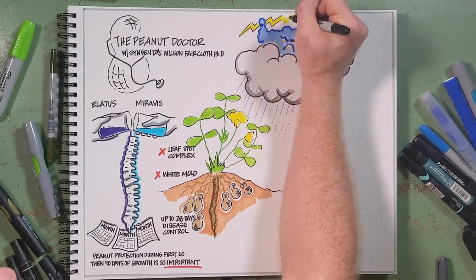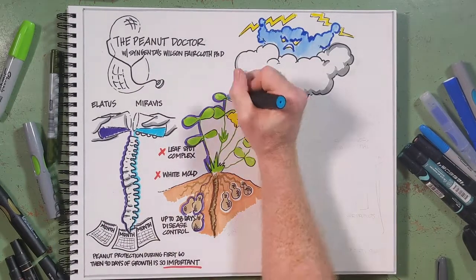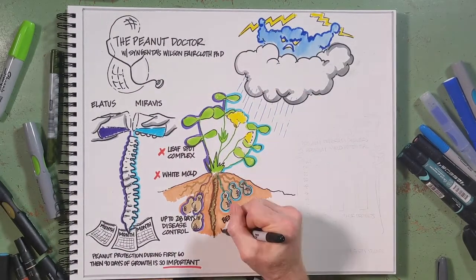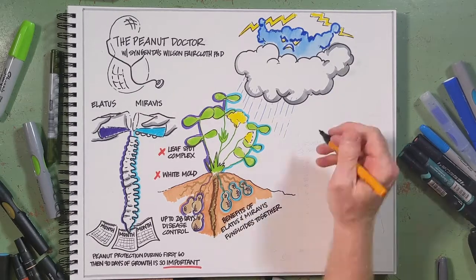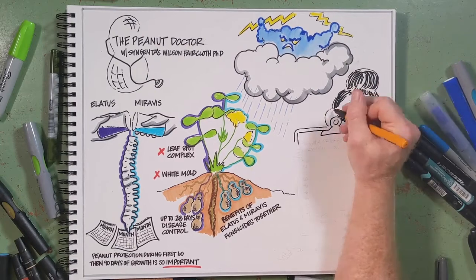While we don't like to see them coming, they're the reality of where we farm. Having products like Miravis and Elatus that have long-lasting control gives you peace of mind that if you can't spray when you need to, you've got protection in that window.